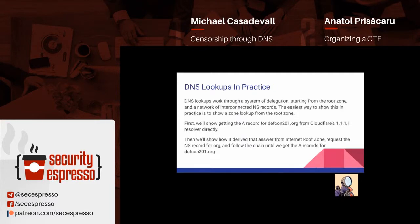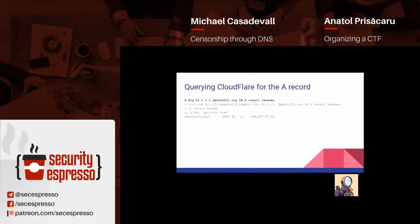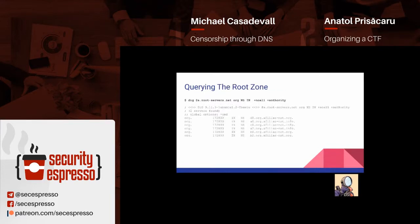Let's walk through a DNS lookup in practice so we can see how the system of delegation works, and then we'll start going into the flaws and security issues with DNS. We need to start at the root zone and work down. Let's start by getting the A record for DEFCON201.org from Cloudflare's 1.1.1.1 resolver and see how it chains all the way down. If you ask a recursive resolver, it will basically just tell you DEFCON201 has this IP address — you're done. But what's happening behind the scenes is a little bit more complicated.